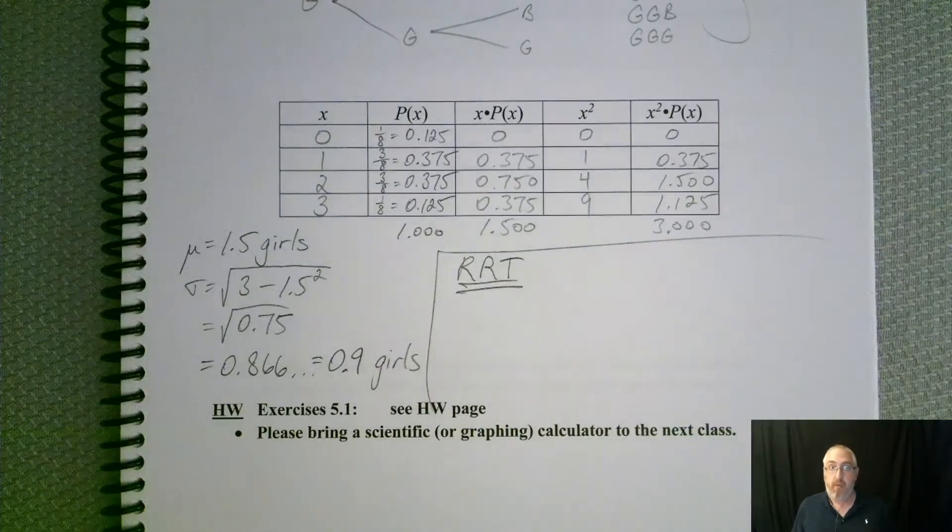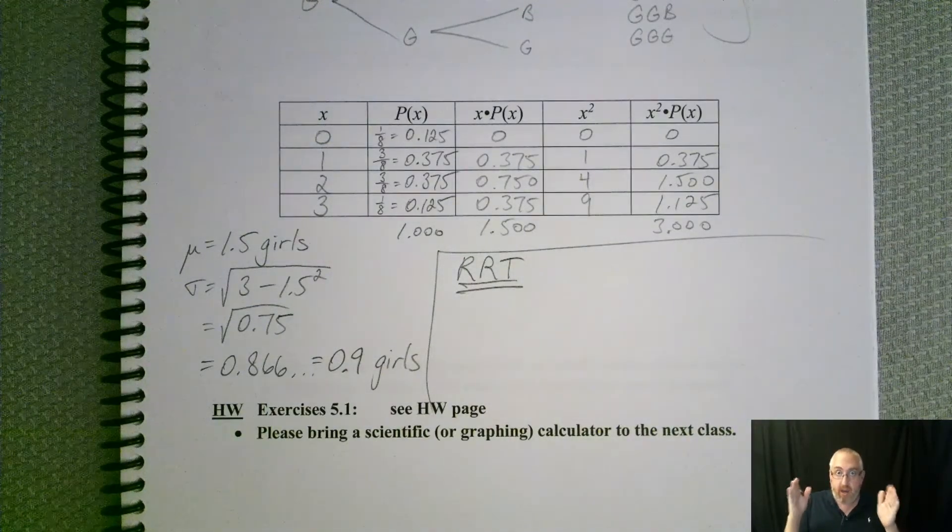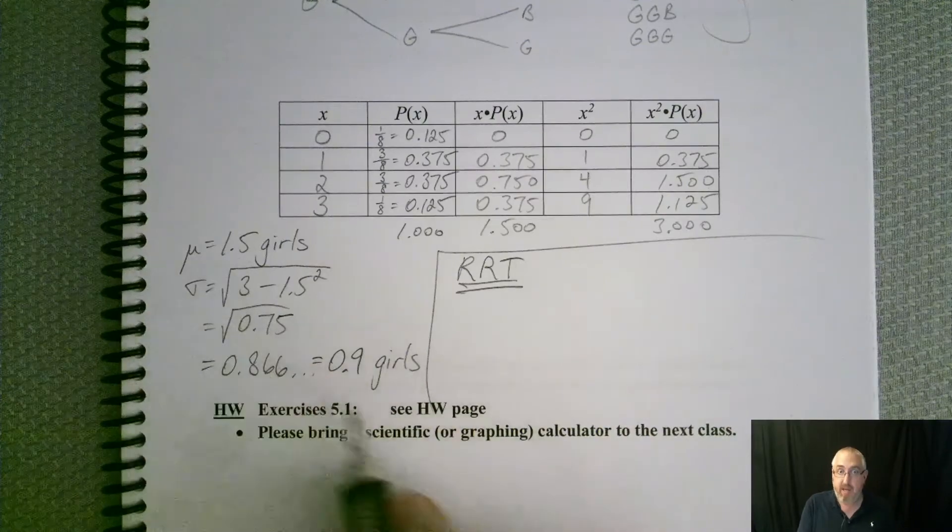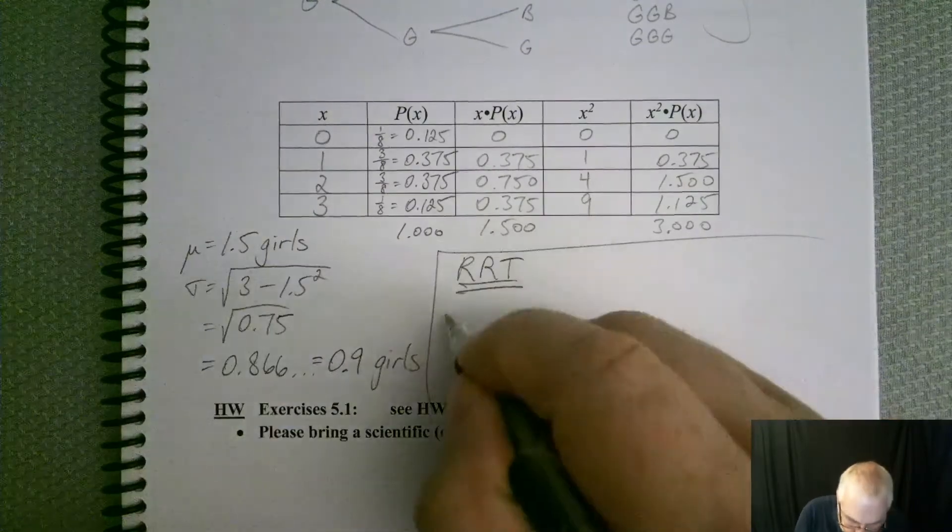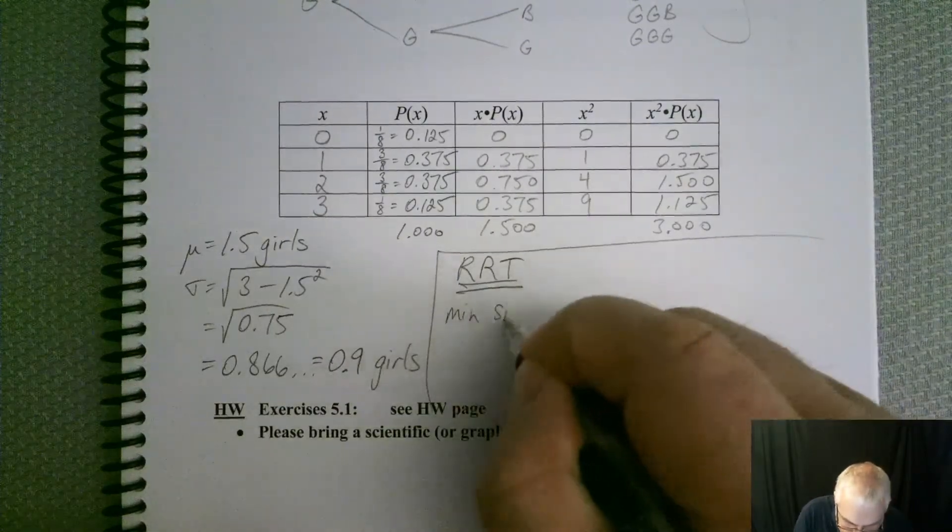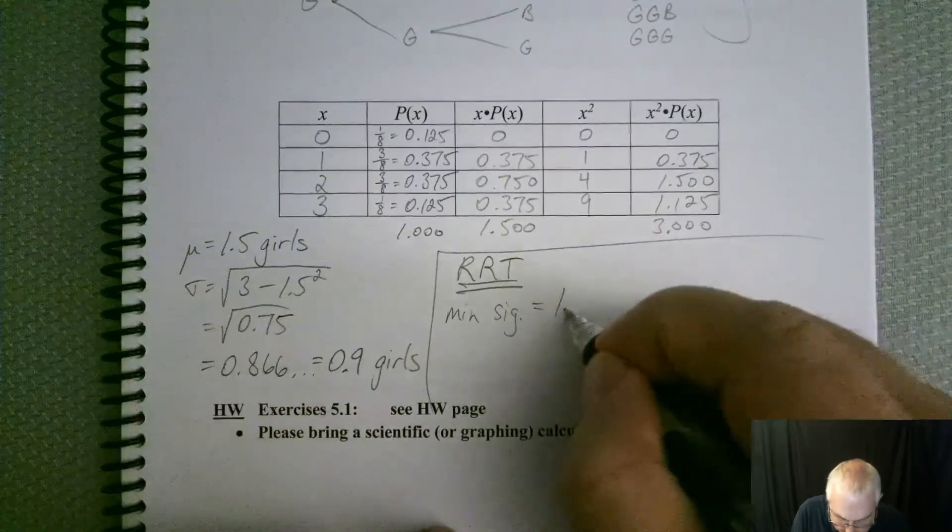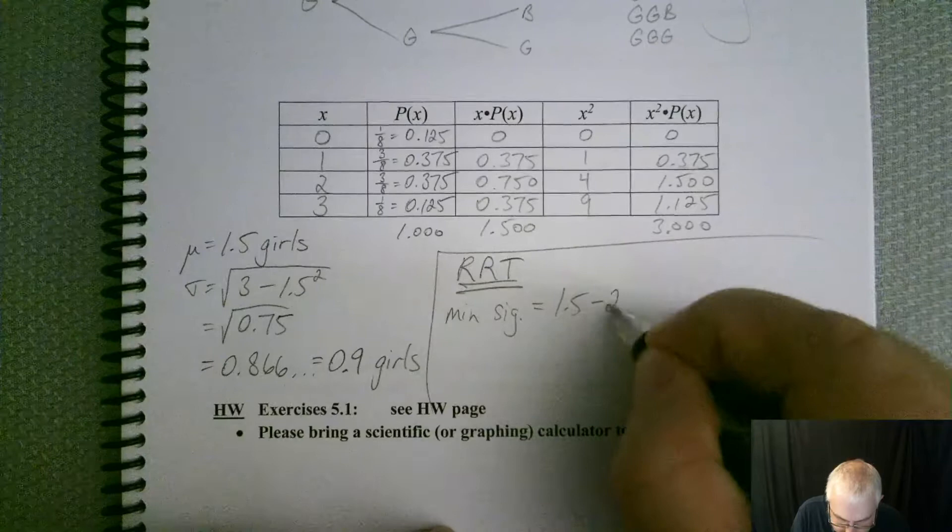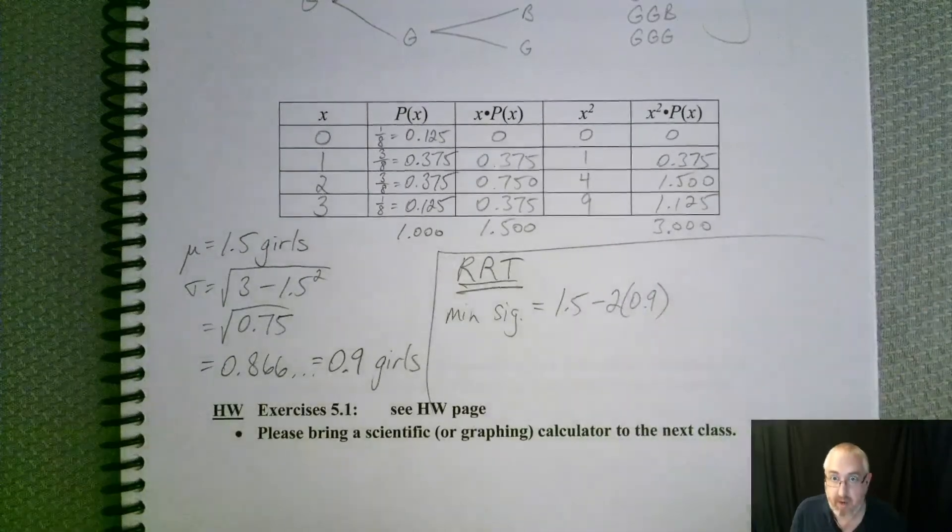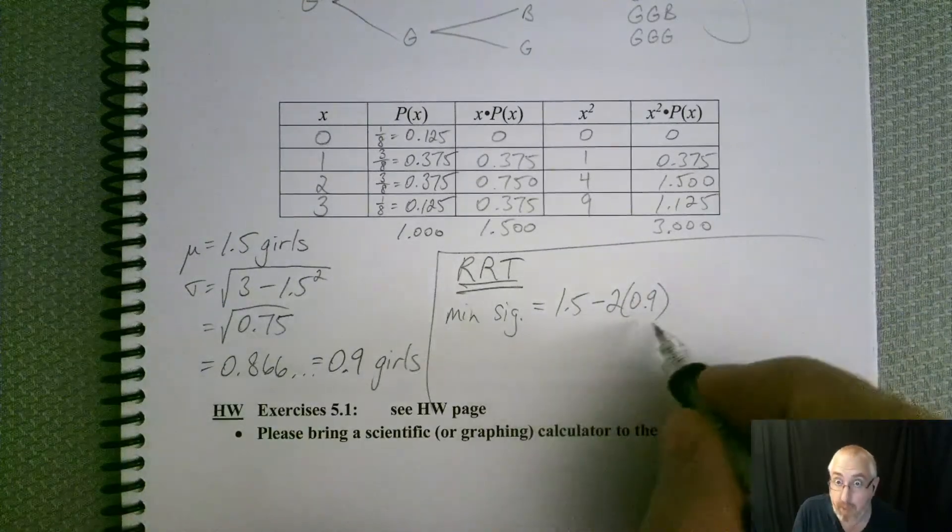So the first way is with the range rule of thumb. Now remember the range rule of thumb, we have to find those cutoffs based off of the mean and standard deviation. So we need our min significant, which is going to be equal to the mean minus 2 times the standard deviation. So that's 1.8.